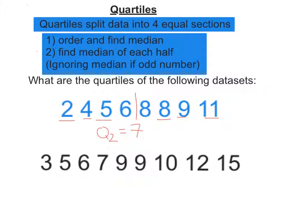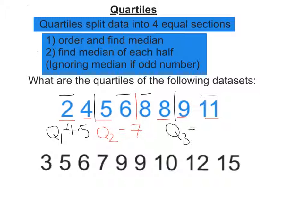Now we find the median of each half. So we've got 2, 4, 5, 6 in the first one, so let's pair them off. That means it's going to be halfway between here. So Q1, the lower quartile, is 4.5. Let's do the same for the other one. We've got 8 and 11, so it's halfway between here. So Q3 is going to be 8.5.